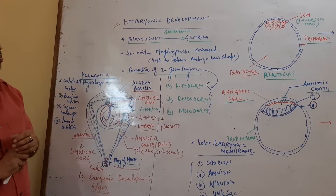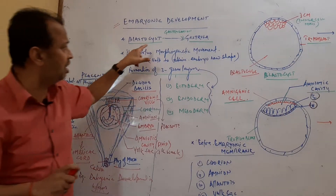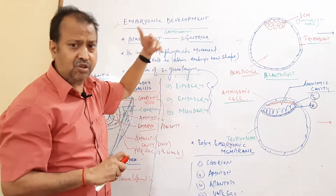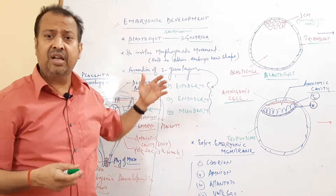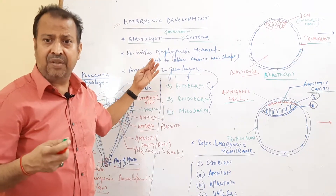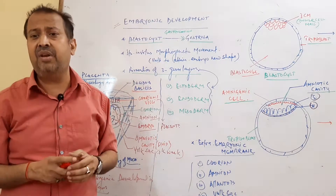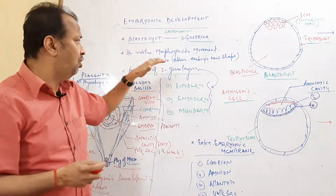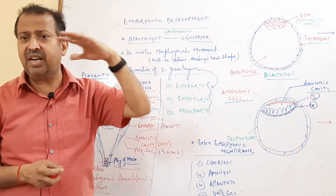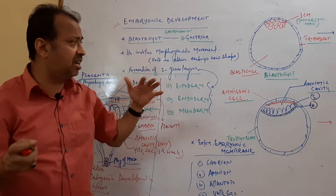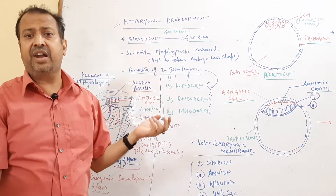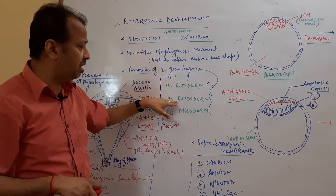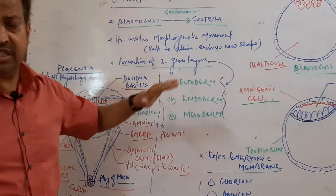Now, what changes take place in the blastocyst? The blastocyst converts into a gastrula, and that process is called gastrulation. Gastrulation is a morphogenetic movement of the blastula to form the germ layers and also gives shape to the embryo. The blastodisc — a disc-like structure — gets elongated and forms three germ layers: ectoderm, endoderm, and mesoderm. In gastrulation, the single layer converts into a double layer.